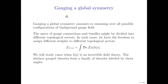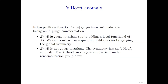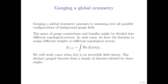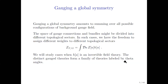Focusing on the first case where the partition function is gauge invariant, gauging a global symmetry amounts to summing over all possible configurations of the background gauge field, making it dynamical. The space of gauge field configurations may be divided into different topological sectors. In such cases, we have the freedom to assign different weights H(A) — a local functional of the gauge field — to different topological sectors.